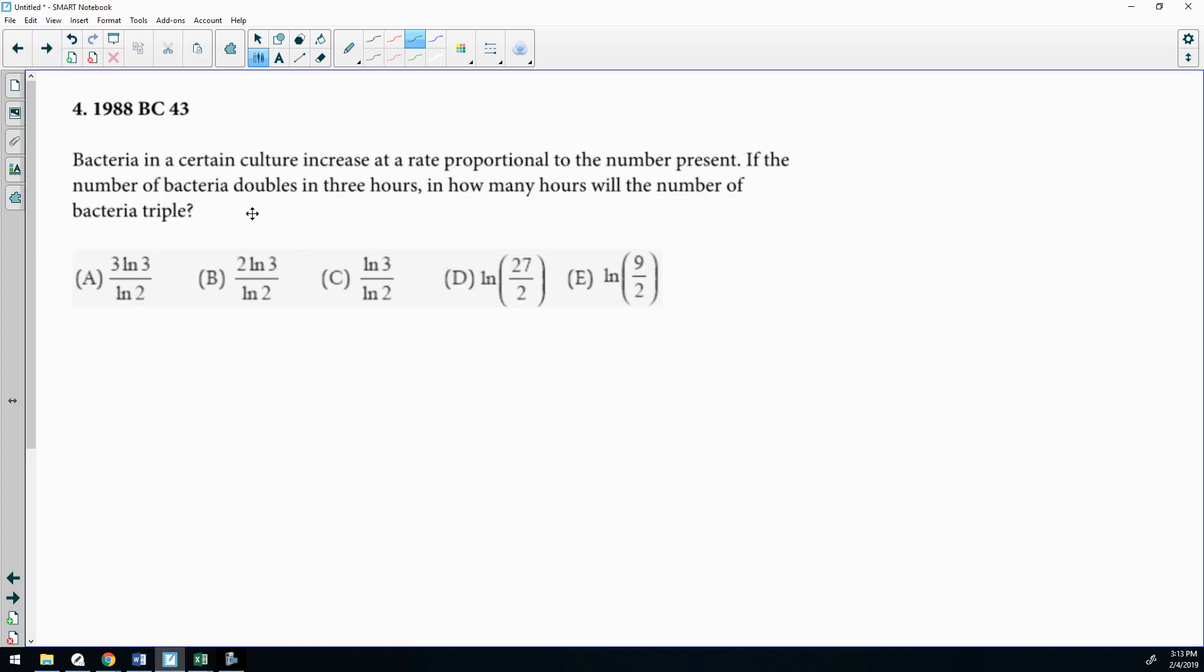Let's look at this one from 1988. Bacteria in a certain culture increase at a rate directly proportional to the number present. There is your generic exponential growth setup. Now, they did not define any variables here. So usually what I will do in this case is let B equal the number of bacteria. It says it's increasing at a rate proportional, so the rate, the derivative, is proportional to the actual population. So dB/dt equals some constant multiple of the population itself. And there we have our traditional exponential growth differential equation set up. And I automatically know that the solution is going to be A times e^(kt). Then you look at the given information and try to solve.